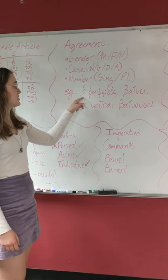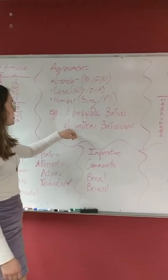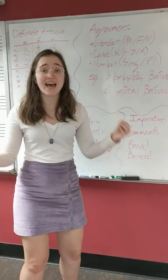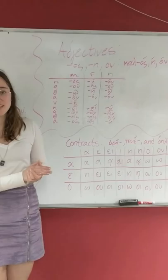So an example is ho rapsodos bainei. The rhapsode goes, singular, and it's masculine. You can tell because it uses ho. And then another example is hoi nautai bainousin. The sailors go, plural, and you can tell that it's masculine because of the definite article.